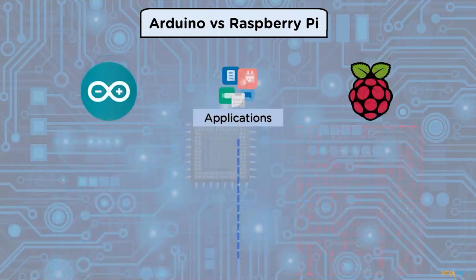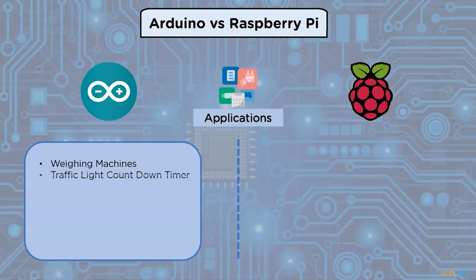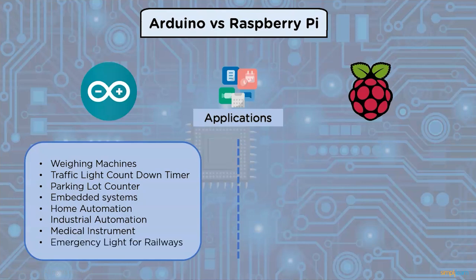Arduino is used in applications such as charging, washing machines, traffic light countdown timers, parking lot counters, embedded systems, home automation, industrial automation, medical instruments, and emergency lights for railways.